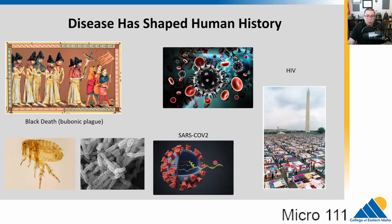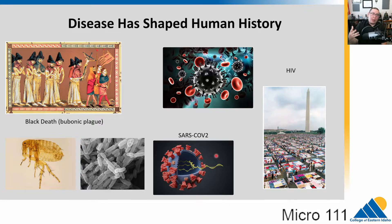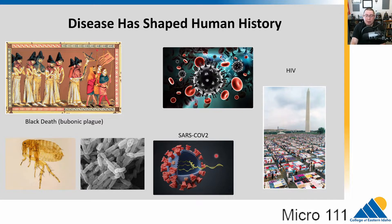We have started to see deaths decrease, but cases keep spiking up and down. We'll talk about why that is in this course — some things about the evolution of viruses. And of course, that has impacted our history greatly recently.